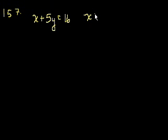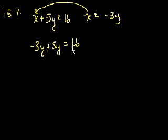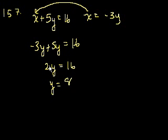Problem 157. If x plus 5y is equal to 16, and x is equal to minus 3y, then what does y equal? Let's just substitute this over here. So we get minus 3y plus 5y is equal to 16. Add those together, you get 2y is equal to 16, or y is equal to 8. And that is choice E.